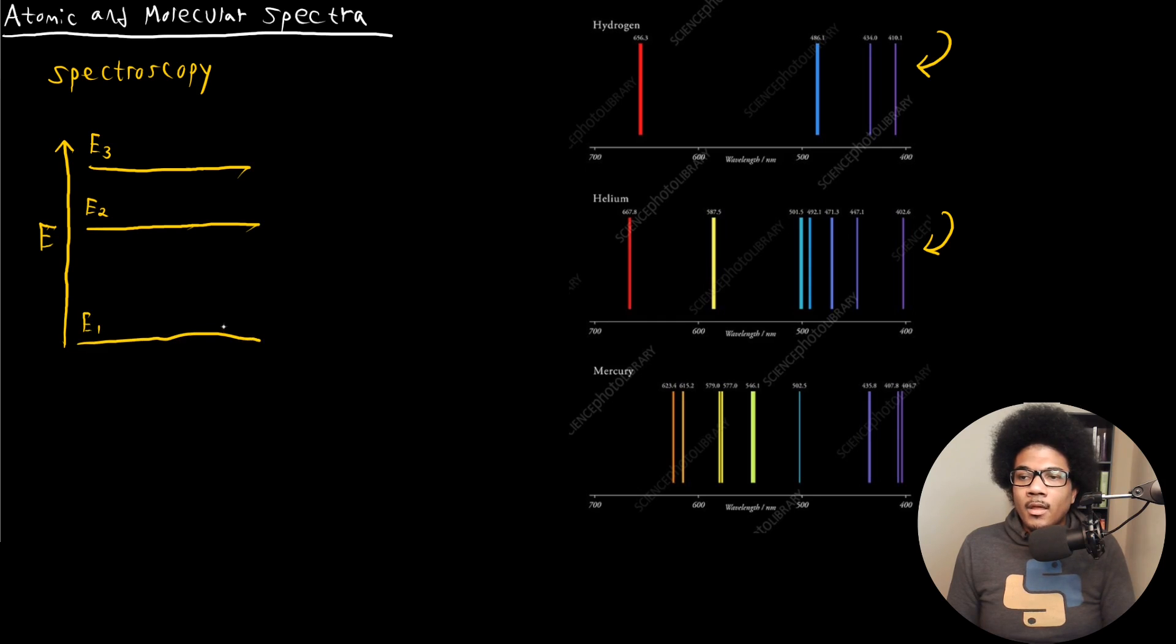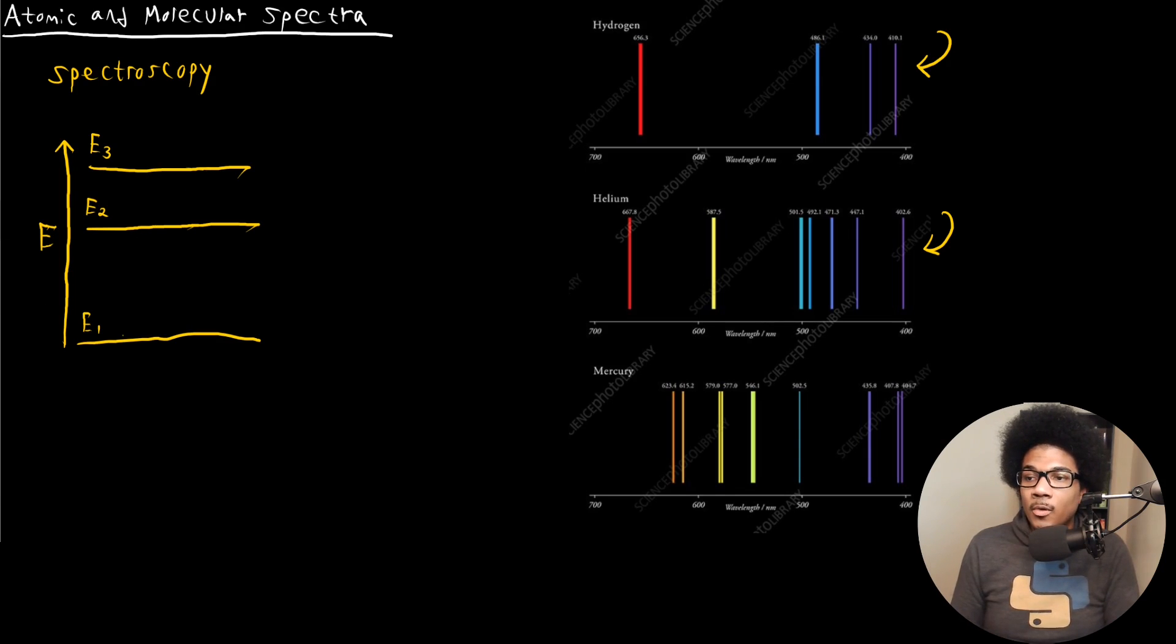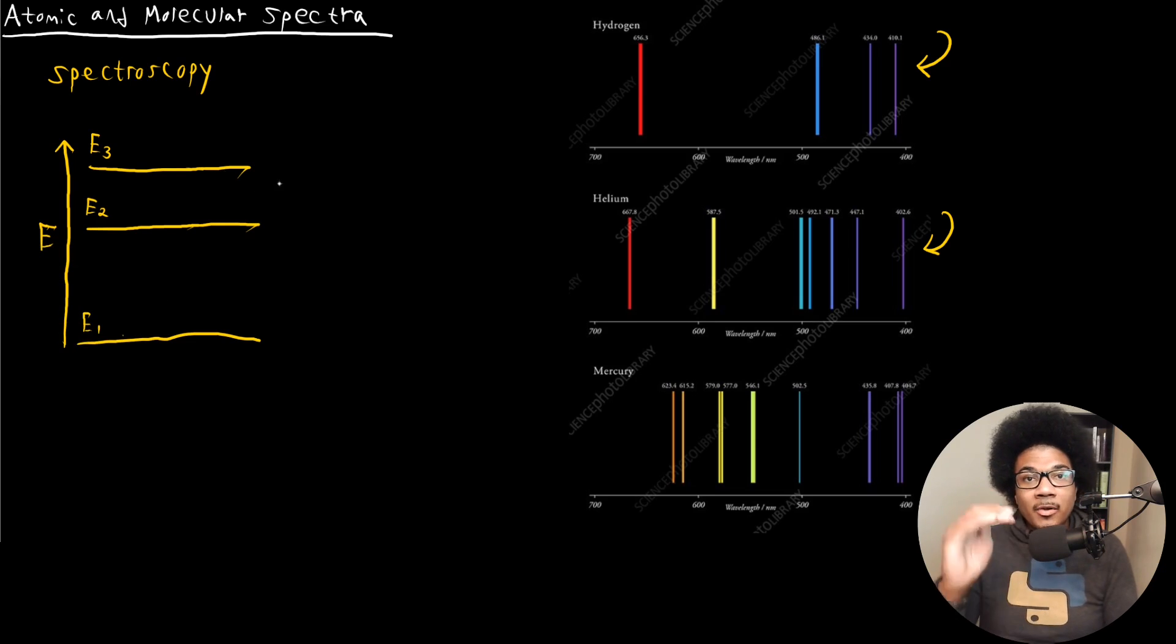So what happens when you excite an electron? Let's say there's an electron here in E1. When it's in a higher excited state, it's going to relax back down to a lower level. When it relaxes back down, it's going to release a photon. So if we have an electron relaxing from E3 down to E2, that's going to release a photon of energy H nu. And that energy is going to be equal to the gap between those energy levels, so E3 minus E2. By knowing what wavelength of light is emitted from that atom, you know what's the energy gap between those two energy levels.